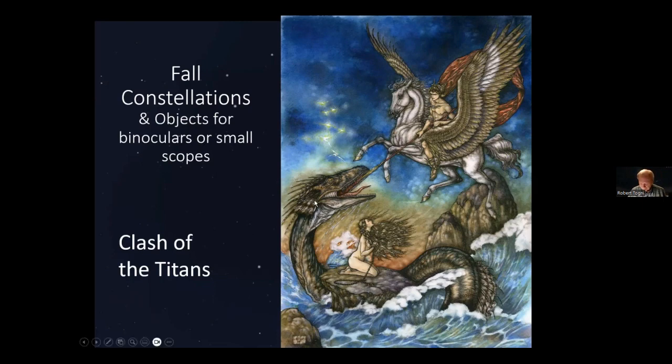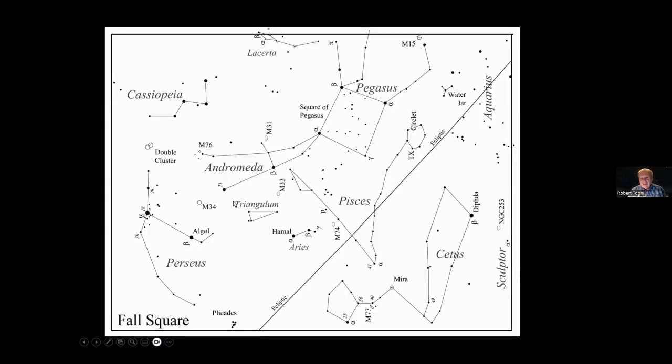As Perseus was flying by, he saw this and he pulled Medusa's head out and the sea monster turned to stone. He rescued Andromeda. Of course, Cepheus and Cassiopeia were happy to have him marry Andromeda. This is the area of the sky. If you stay up till about midnight tonight, it's like this looking toward the east.